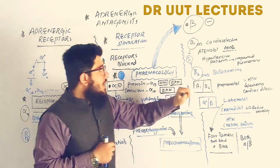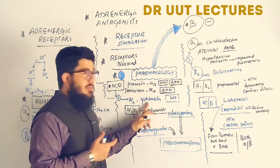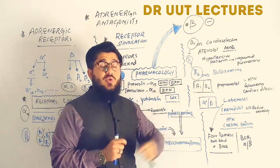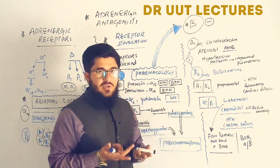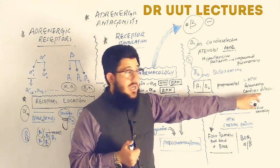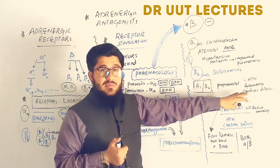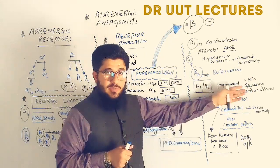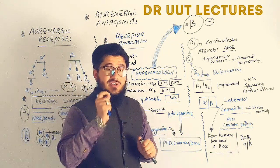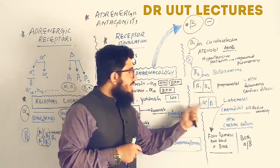Butaxamine is a beta-2 selective blocker used only for research, similar to yohimbine — both have no clinical use. The non-selective beta-1 and beta-2 blockers include propranolol, alprenolol, and timolol. Propranolol is used for treating hypertension, glaucoma, and cardiac diseases, but is contraindicated in patients with pulmonary complications such as asthma or COPD due to the risk of bronchoconstriction from beta-2 blockade.